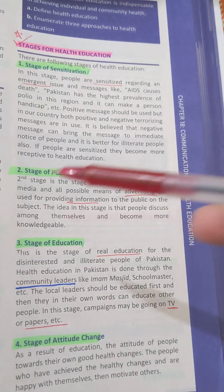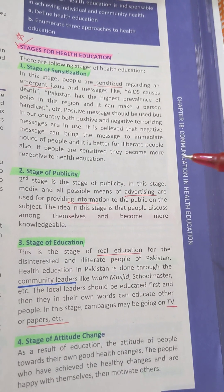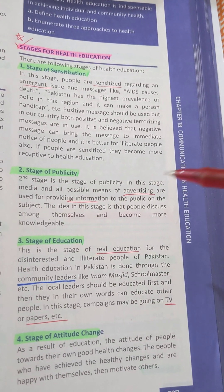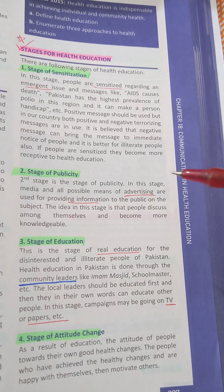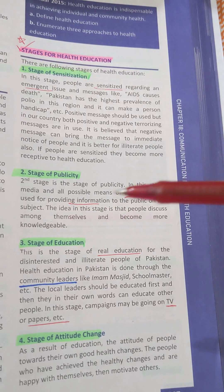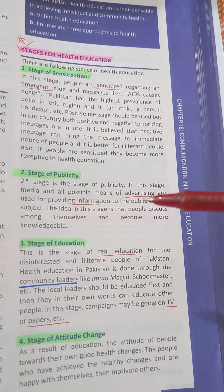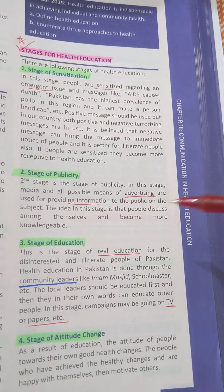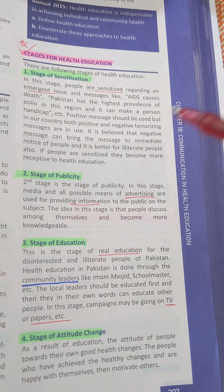Stage two is the stage of publicity. In this stage, media and all possible means of advertising are used for providing information to the public on the subject. The idea in this stage is that people discuss among themselves and become more knowledgeable.